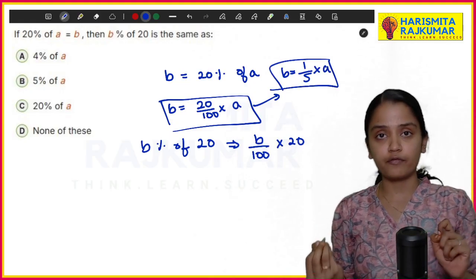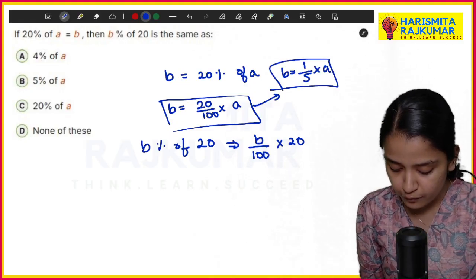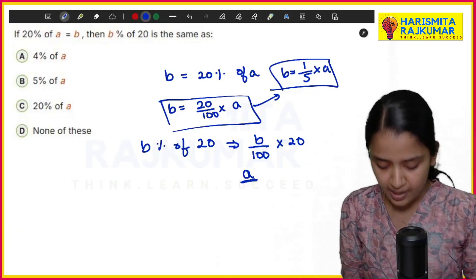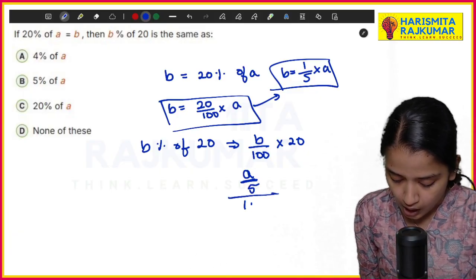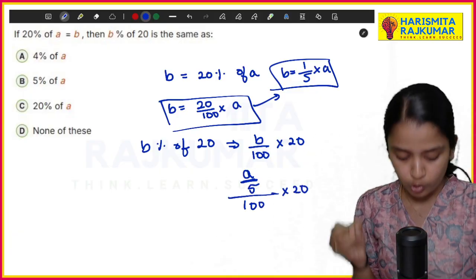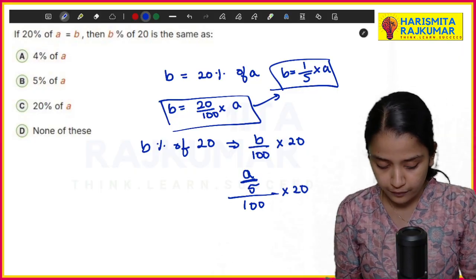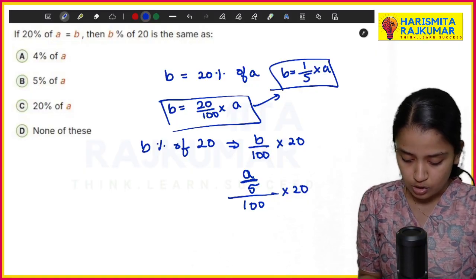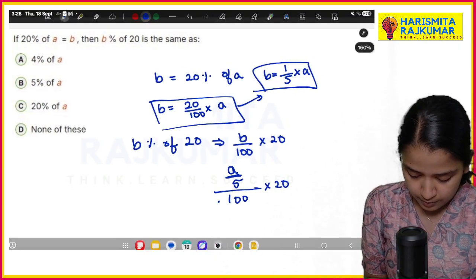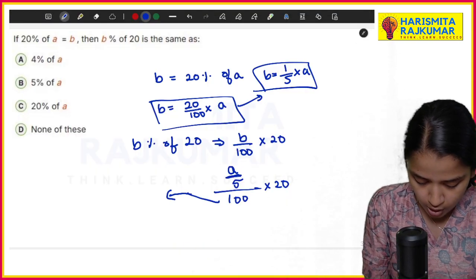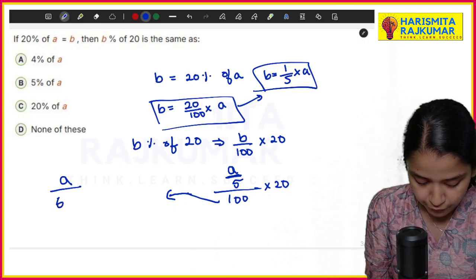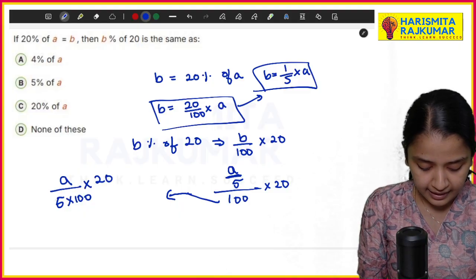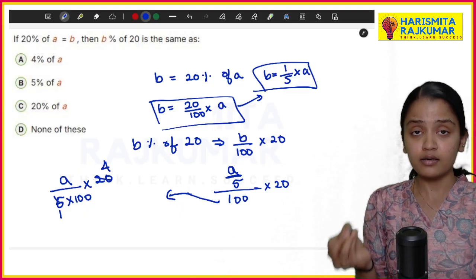So b is 1/5 × a, so instead of b let me write a/5. So 1/5 × a is a/5, then divided by 100 × 20. Now I'm not erasing my 100 because I need percentage. So it is a/5 ÷ 100 × 20. 20 I can cancel, 5 into 5 is 4.